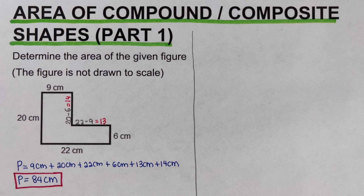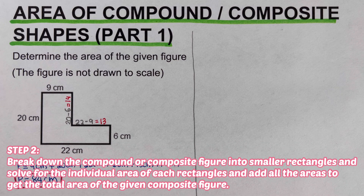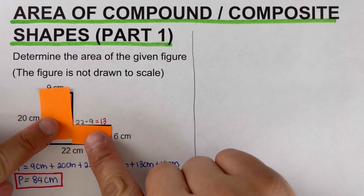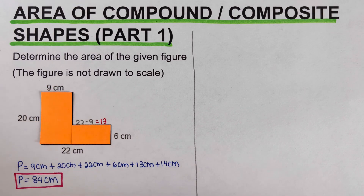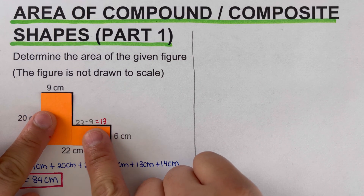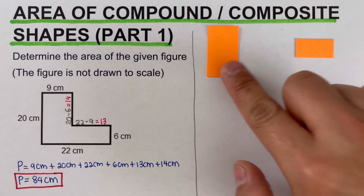Now for step 2: break the compound or composite figure into rectangles, solve for the individual areas of each rectangle, and add all the areas to get the total area. I have cut this composite figure using paper to better understand this. We are going to break this total picture into two pieces.